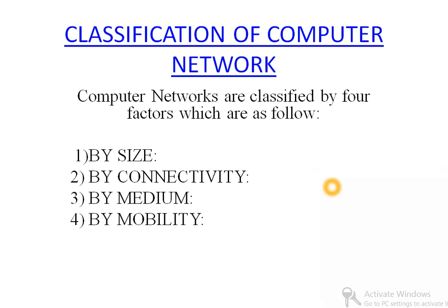We can classify computer networks according to different criteria or factors. For example, by size — the size of the computer network; by connectivity — how we connect the computers; by medium — which sort of medium we use; and the fourth one is by mobility.